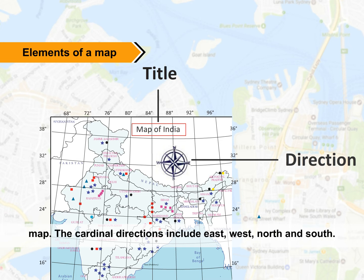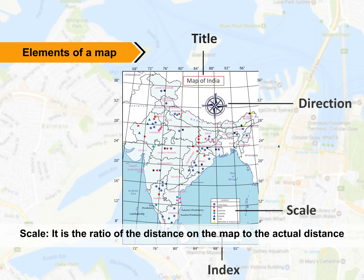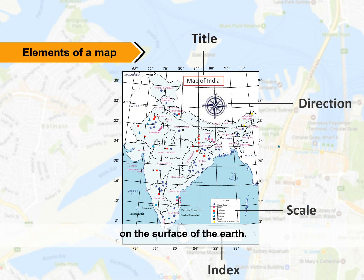The cardinal directions include east, west, north, and south. Scale is the ratio of the distance on the map to the actual distance on the surface of the earth.